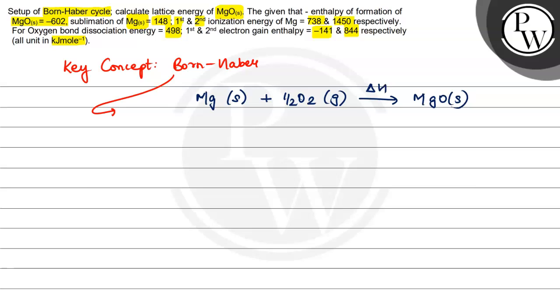But behind this is the Born-Haber cycle process. So in the Born-Haber cycle, first Mg solid will become Mg gas through sublimation, and then it will go into ionization to Mg 2 plus.